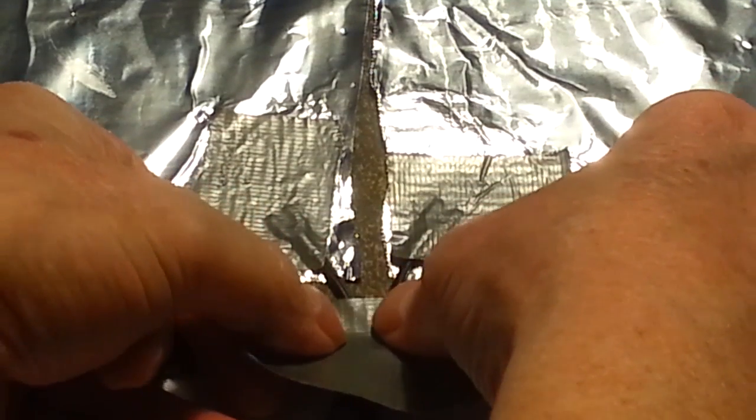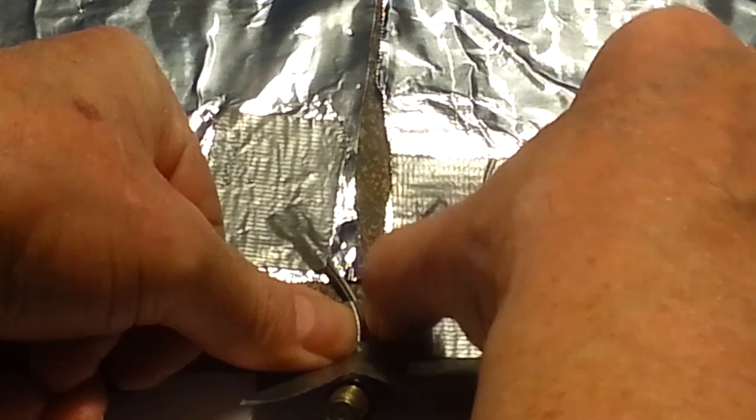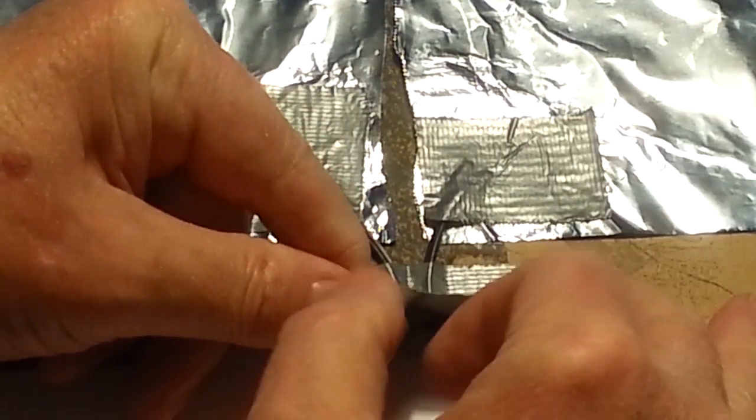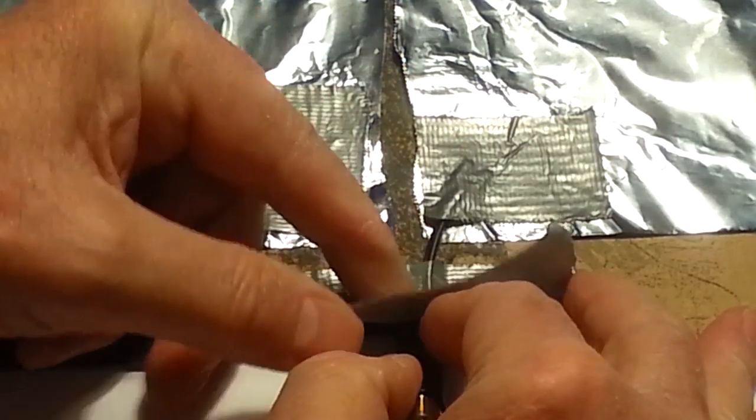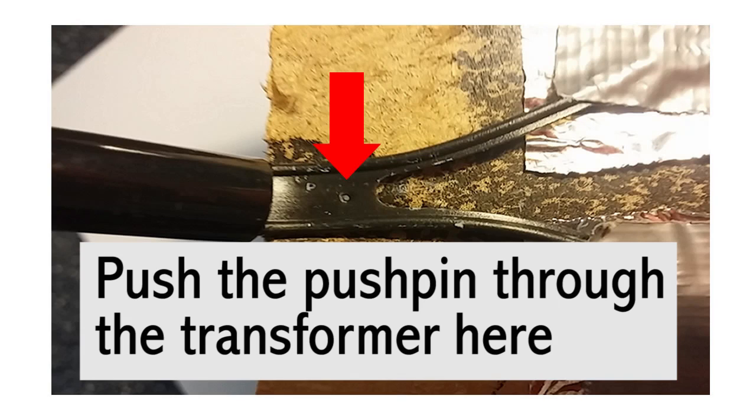You can use another piece of tape to tape the transformer to the cardboard, but it isn't necessary since you'll be using a push pin to attach the transformer to the cardboard.